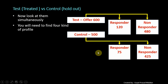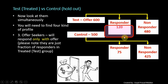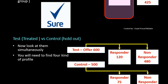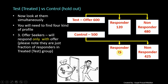The third profile is the Offer Seeker — someone who responds only when they see an offer or incentive. These are people who will respond only when the offer is given, but otherwise they will not. In contrast, the Sure Shots respond anyway either with or without an offer, while Offer Seekers respond only when the offer is provided.